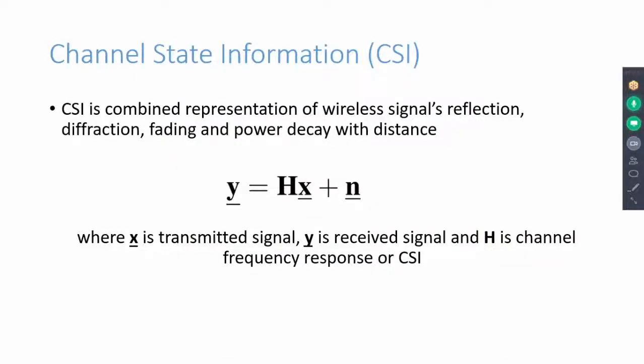Once the signal is received at the receiver, channel state information is estimated and extracted for use. CSI is a combined representation of phenomena associated with wireless signal such as reflection, diffraction, fading, and power decay with distance.